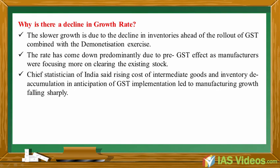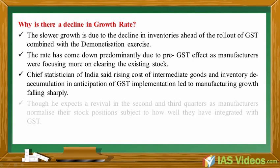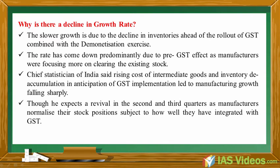The Chief Statistician of India said rising cost of intermediate goods and inventory accumulation in anticipation of GST implementation led to manufacturing growth falling sharply. Though he expects a revival in the second and third quarters as manufacturers normalize their stock positions, subject to how well they have integrated with GST.